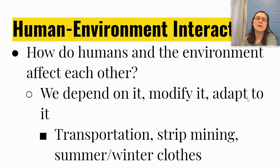Human environment interaction answers the question, how do humans and the environment affect each other? We depend on it, modify, adapt to it. We talked about some ways that we interact with the environment, like transportation, strip mining, and using summer and winter clothes based on the seasons.